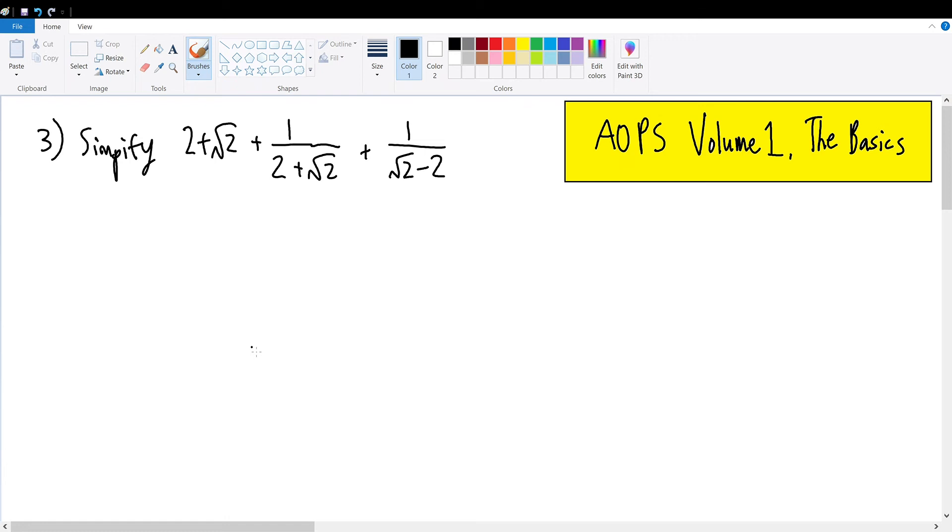AoPS Volume 1, The Basics. Simplify 2 + √2 + 1/(2 + √2) + 1/(√2 - 2), which is problem number 3. To simplify this fraction, we will give common denominators and sum the numerators.